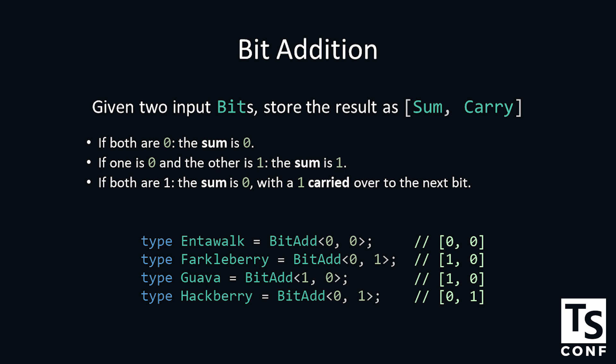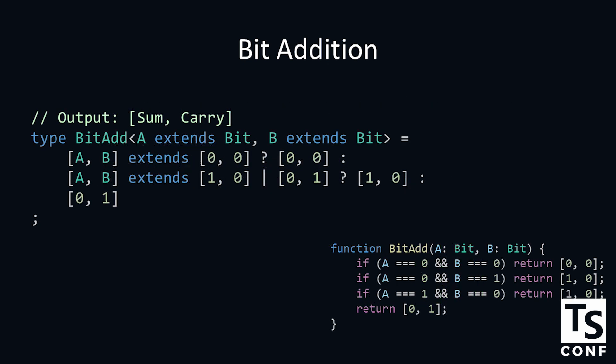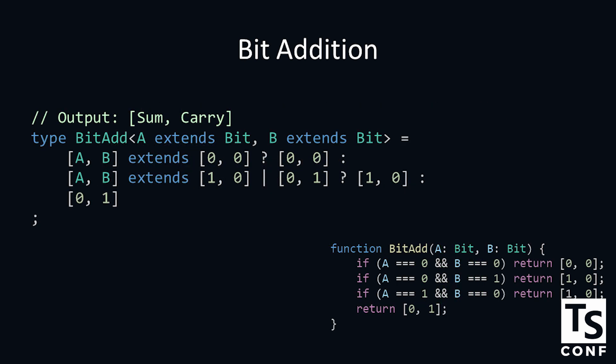This is our bit add in the TypeScript type system. If A and B are both 0, then the result is sum 0 carry 0. If A and B are either 1, 0 or 0, 1, then the result is 1, 0. Otherwise, the result is 0, 1. Which you can represent in if-else statements in JavaScript.